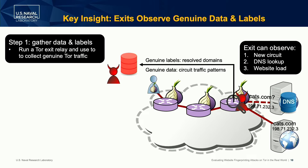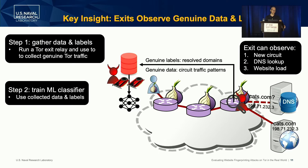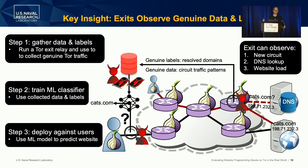As regular clients using the Tor network build circuits, they will occasionally choose the adversary's exit relay in their circuits. The exit can observe the circuit, and it will observe a DNS lookup for whatever websites the users are browsing, and then it will observe the website load. The DNS lookup — the resolved domain — provides a genuine label. And the traffic patterns of the website load will provide the genuine data that the adversary can use to train machine learning classifiers and deploy them against users in a de-anonymization attack.